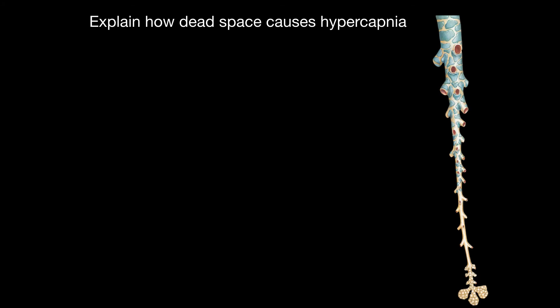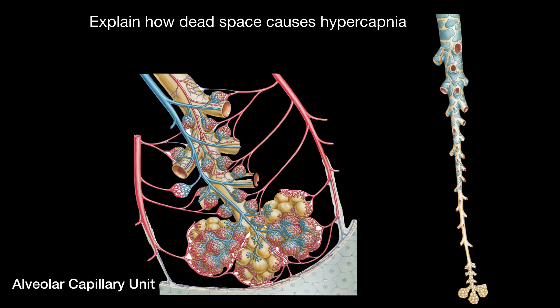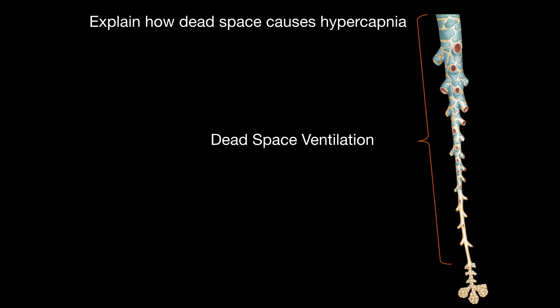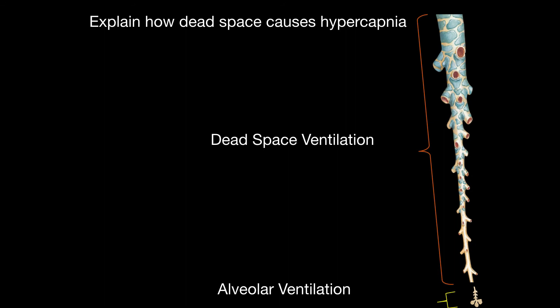Here is your respiratory tract. Within it, you have alveolar capillary units where ventilation occurs — not in the dead space. In practice, if someone's anatomic dead space increases, they will often compensate by increasing total minute ventilation to maintain alveolar ventilation. But in sick patients, they can't always do this. As dead space ventilation goes up, alveolar ventilation goes down, causing hypercapnia. This classically occurs in COPD and also in asthma.